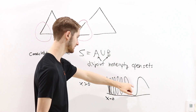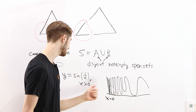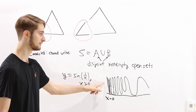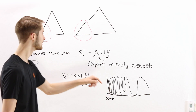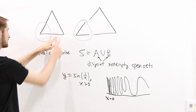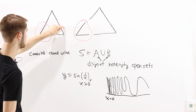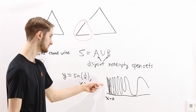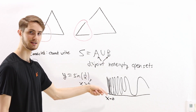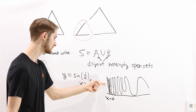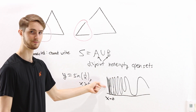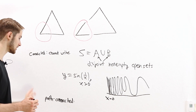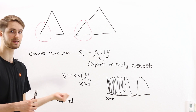Starting from some point on the graph of sin(1/x), there's no way to get to the line at x = 0 on a continuous path. On the triangle, any two points have a path between them. But that's not the case here. This motivates a new definition called path connectedness.